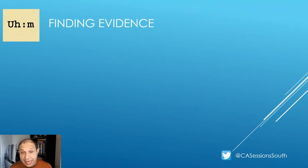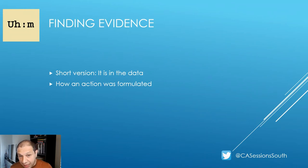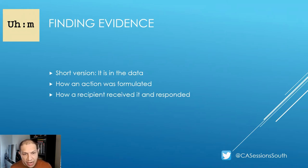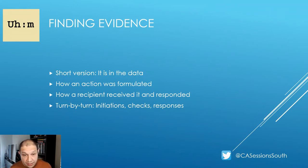Once you've identified a practice, the next step is to find your evidence. The evidence used to construct an analysis is in the data — and your data is your audio and your video, not your transcripts. It's in the data that you can see how an action was formulated from what is said and how it is said. It's in the responses, or lack of response, that you can see how a recipient oriented to that action. This turn-by-turn micro-analysis — identifying initiations, checks for understanding, responses, and so on — is the core of CA. The next-turn proof of procedure is what allows validity checks to be performed on analytic claims.